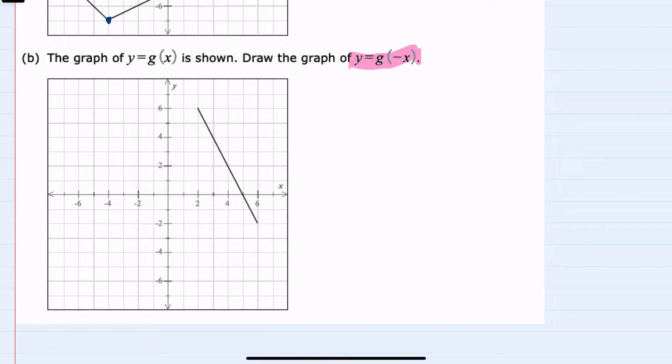And then for part b, we have a different graph. This time g of x, and we are asked to graph y equals g of negative x. Notice that this time the negative is inside where the x's are. So this time each of the x values will become their opposites reflecting across the y axis.